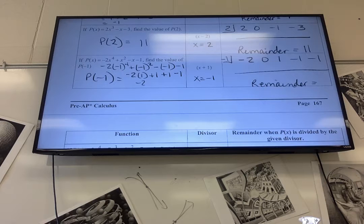So it's negative 2 plus 1 plus 1 minus 1. So negative 2 plus 1 is negative 1. Negative 1 plus 1 is 0. And 0 minus 1 is negative 1.